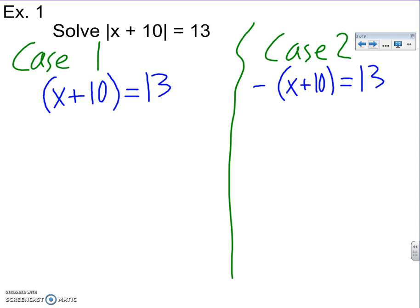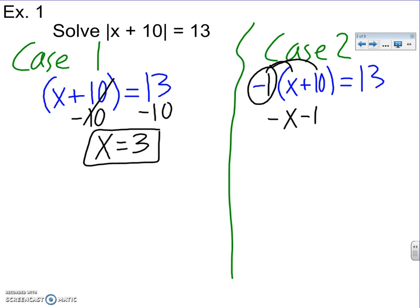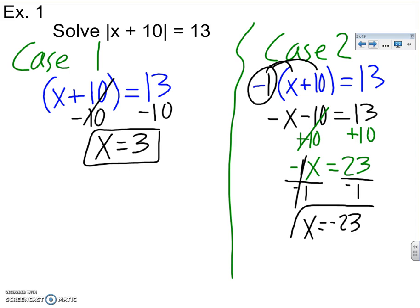You solve each one just regular algebra. The first one, parentheses don't matter, so I just get x by itself, subtract 10, x equals 3. The second one, there's a negative 1 out there. Make sure you distribute this. Negative x minus 10 equals 13. Add 10 to both sides. Negative x equals 23, and then you divide. So x equals negative 23.